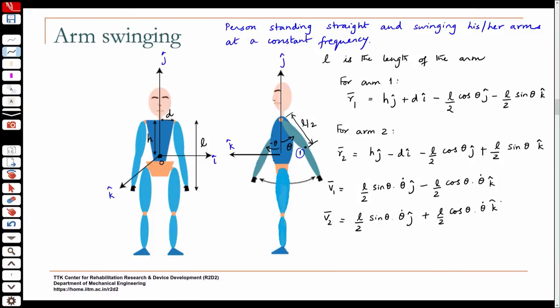Now I can look at the angular momentum due to these moving masses — the arms. I can write H_naught equals the sum over i = 1, 2 of R cross M_A times V_i, where we have lumped the masses at the centre of mass.